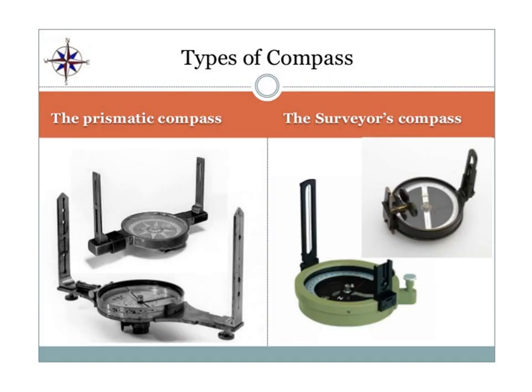This slide refers to two types of compass: one is prismatic compass and another is surveyor compass. We can observe the image of the prismatic compass on the right part and the image of the surveyor compass on the left part. When using the prismatic compass, we make use of a prism and the object vane, and by establishing a line of sight passing through the high slit of the prism and object vane in continuation with the ranging rod, that line is called the survey line. The angle measured for that line with reference to the magnetic meridian is called the bearing of a line.